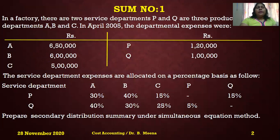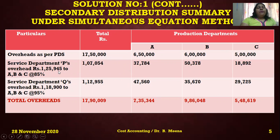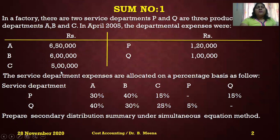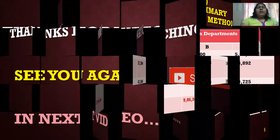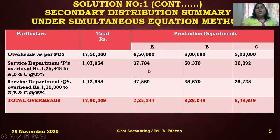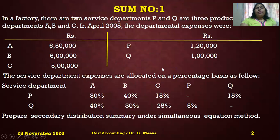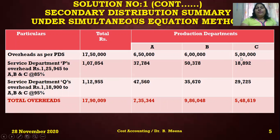Calculating: 1,25,945 × 30% for A = 37,784; 1,25,945 × 40% for B = 50,378; and 1,25,945 × 15% for C = 15,378 (approximately 18,892 as shown). These amounts are entered in the respective columns for production departments A, B, and C in the distribution summary.